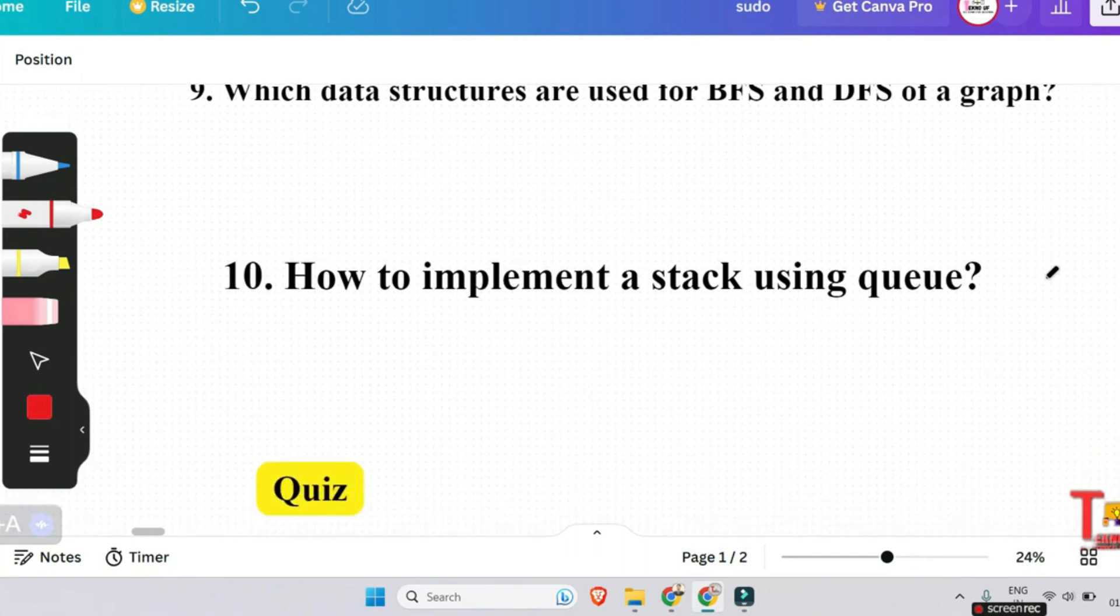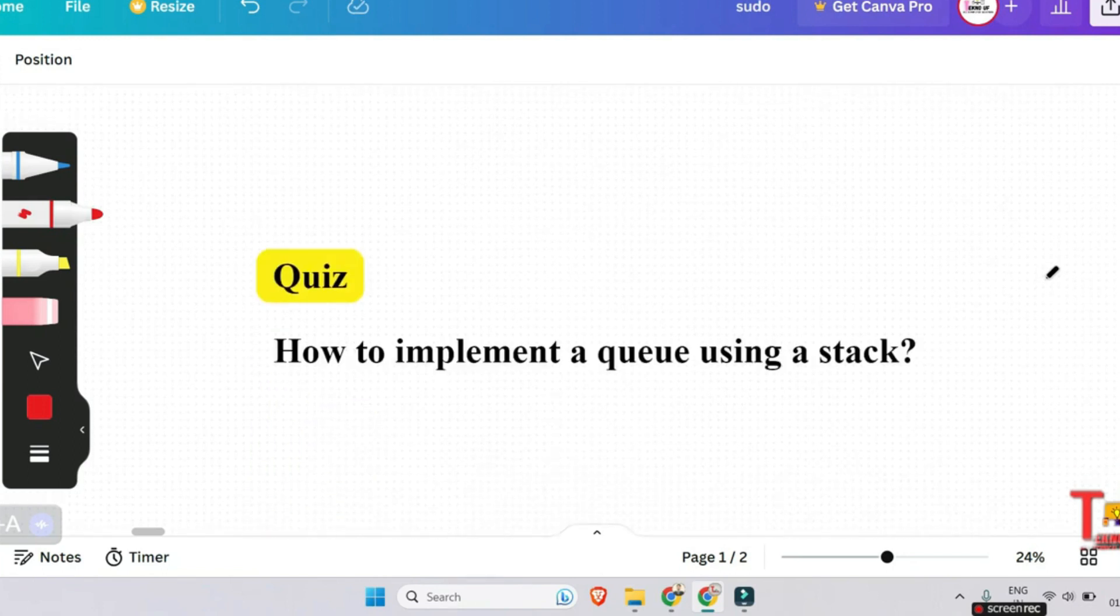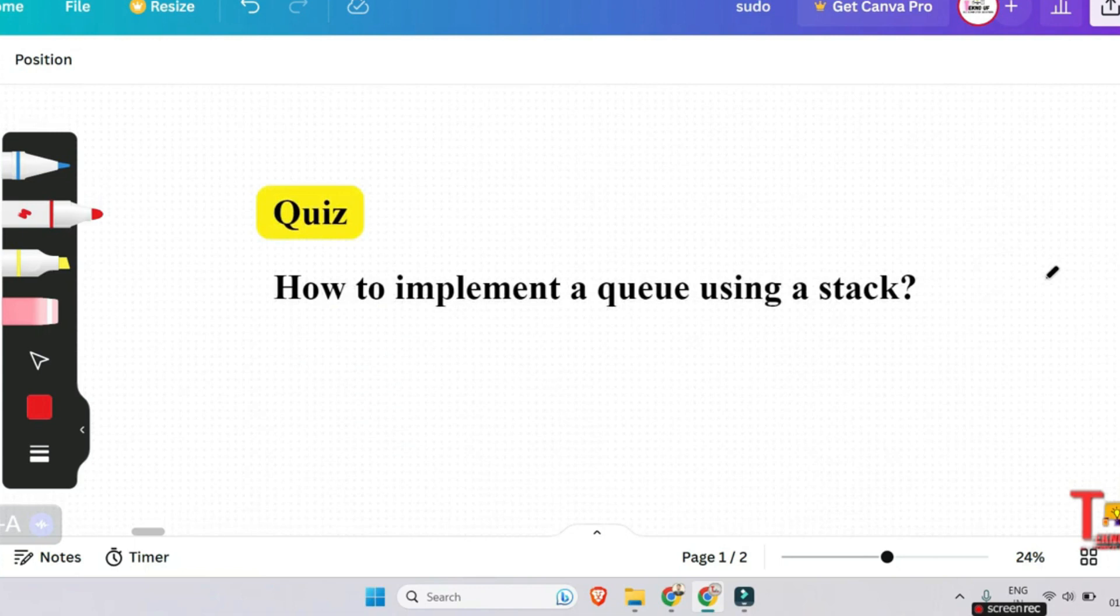The next question is how to implement a stack using queue? Stack can be implemented using two queues. Method one: by making push operations costly, and method two: by making pop operation costly. And the next question is how to implement a queue using a stack? This is a quiz question for you. Please give me the answer in the comment box.